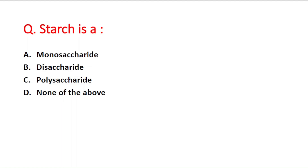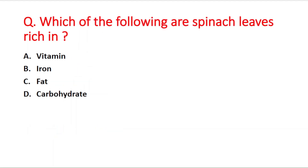Next question: which of the following are spinach leaves rich in? Option A vitamins, B iron, C fat, D carbohydrate. The right answer is option B — iron.